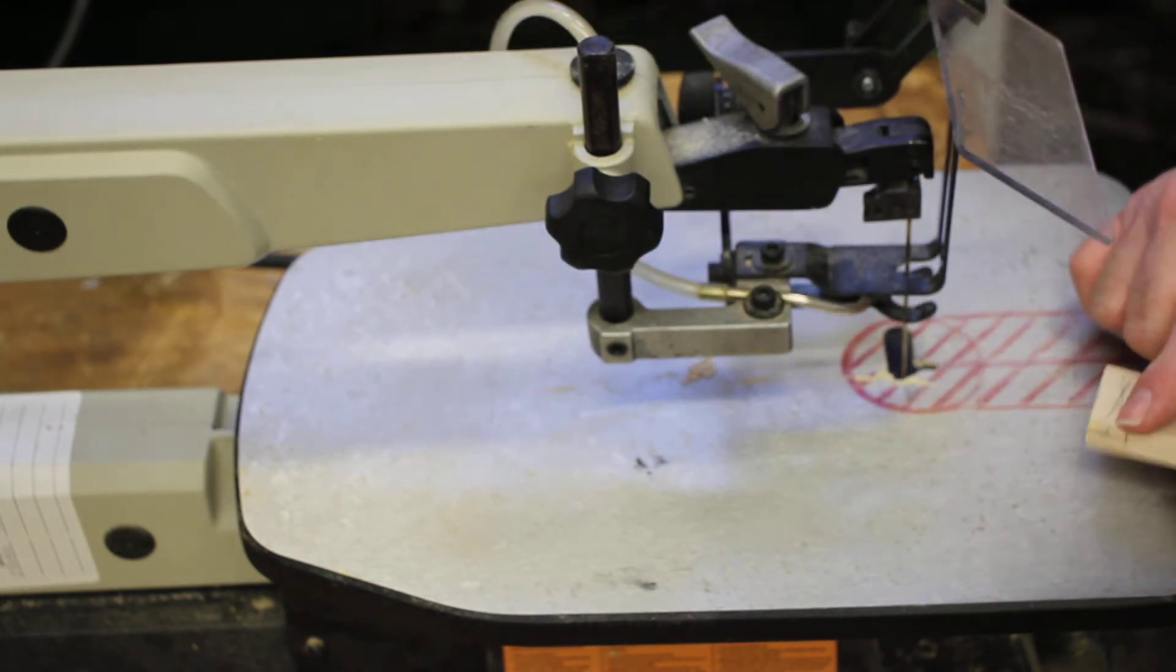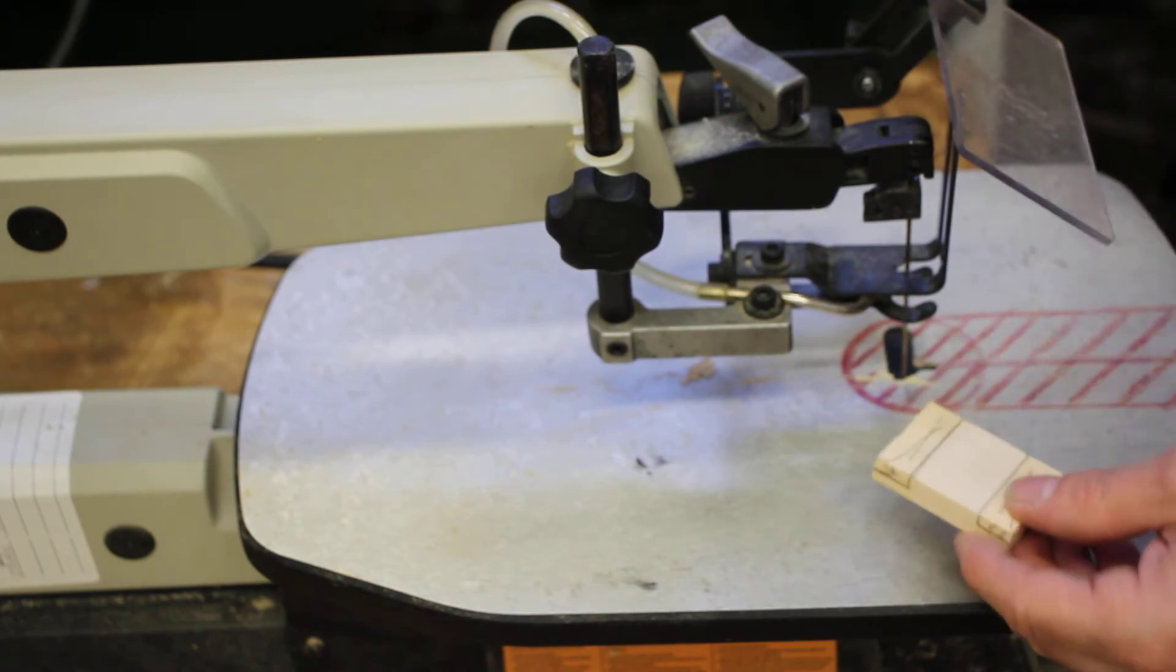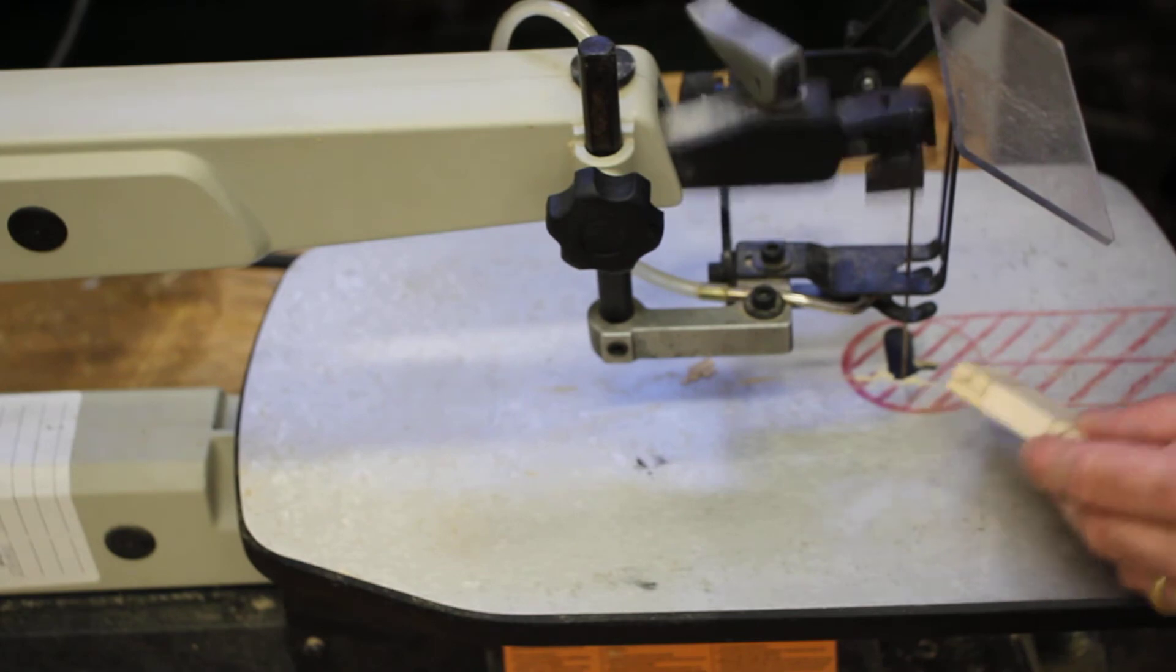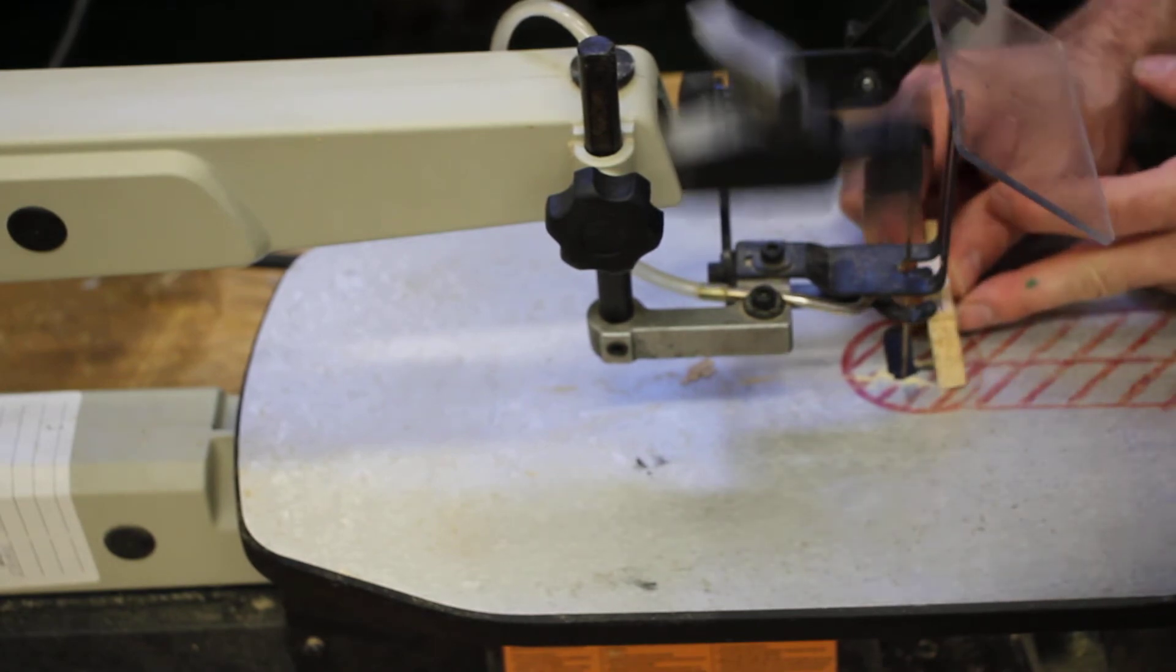We're going to turn the saw on again and carefully just make our simple marks. Then we'll disassemble these pieces and cut each one individually. Being careful where your hands are at all times.